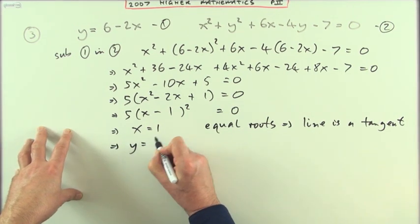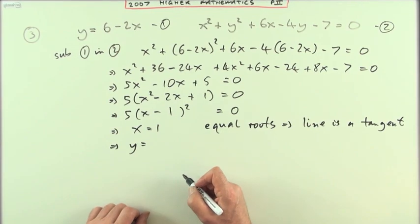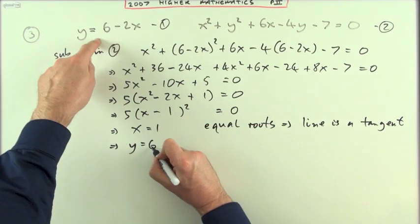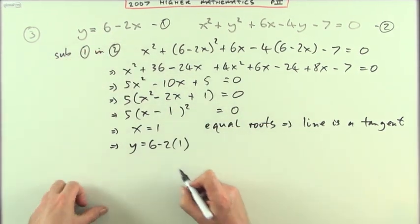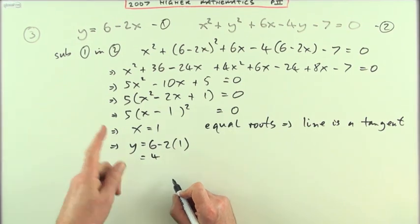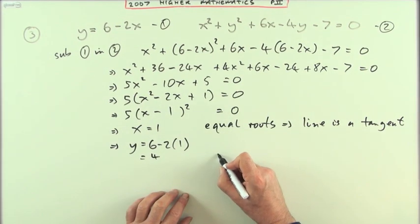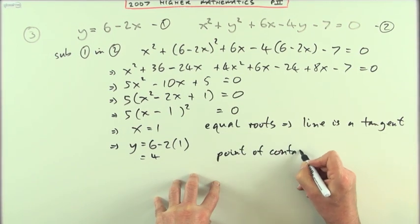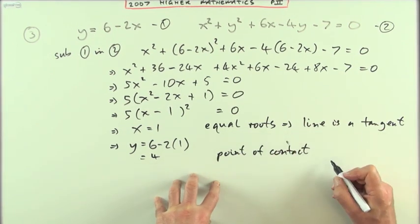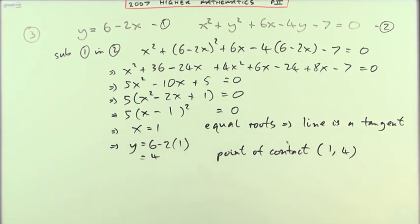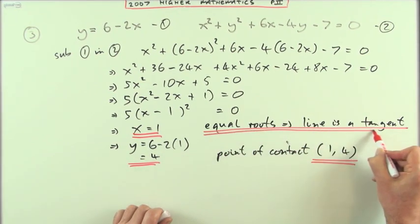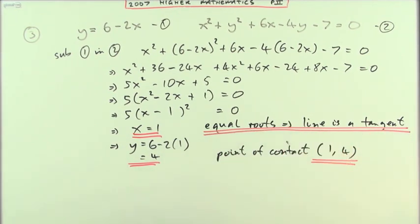And then find what y is. Now that I've found what x is, pop it back into one of the equations. Let's just put it back in there. So I've got 6 minus 2 times 1, which is 6 take away 2, which is 4. So there's my answer. So the point of contact, let me as well put the wording down, the point of contact is (1, 4), underlining that part as well because it asked for a demonstration of that.